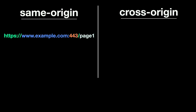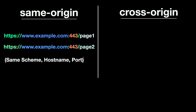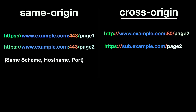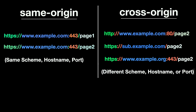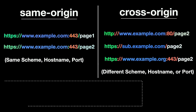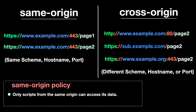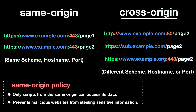Here's the important part: if two URLs have the same scheme, hostname, and port, they are considered same-origin. Otherwise, they are cross-origin. The same-origin policy is important for web security because it limits how different websites can interact with each other. It ensures that only scripts from the same website can access its data, preventing malicious websites from stealing sensitive information.